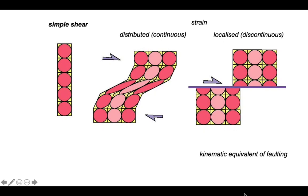So simple shear like this is the kinematic equivalent of faulting. Well, we know that faulting is a common tectonic process. So let's explore the simple shear model for shear zones.